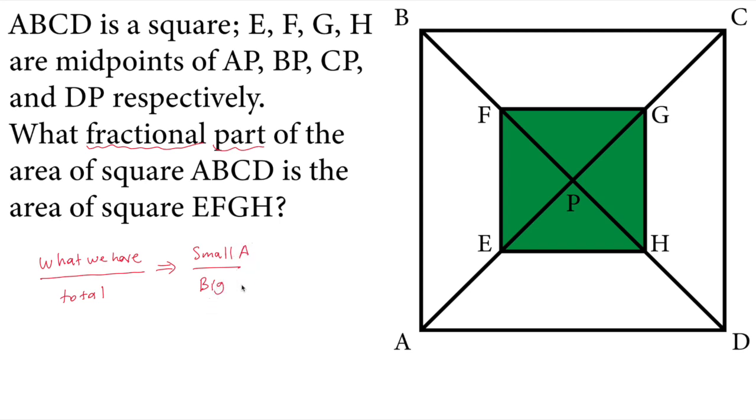That means we need to find the small area and the big area in this question, and then we will divide them. So how do you find small area and how do you find big area? We don't need to know the side lengths of these squares, but we can just make it up and find relative relation between them.